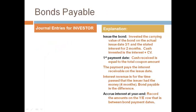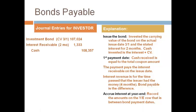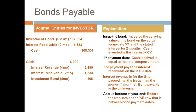The journal entries for the investor are for the same amounts as the company or the issuer, but the accounts used are different — we will use asset accounts and income accounts. Investment in bonds is used instead of bonds payable. Interest receivable is used instead of interest payable. Interest revenue is used instead of interest expense. The amounts are for the same time periods, so the amounts are the same. Take a moment and notice the differences in the entries for the investor and the entries for the issuer.